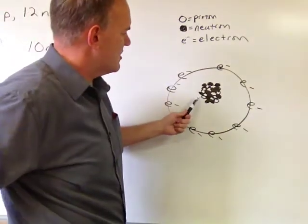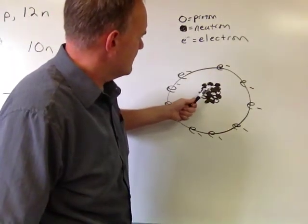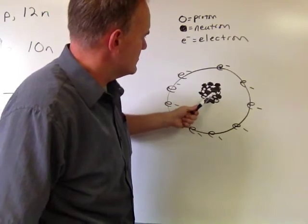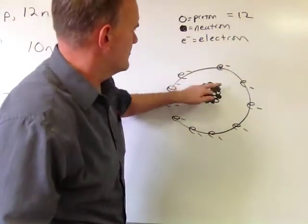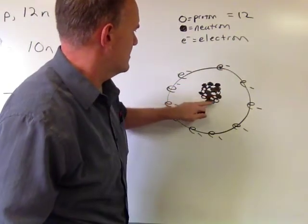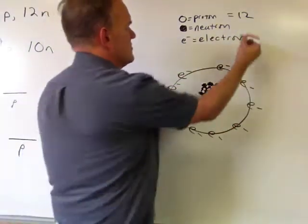So in this drawing if we count them up we have 1, 2, 3, 4, 5, 6, 7, 8, 9, 10, 11, 12 protons, we have 1, 2, 3, 4, 5, 6, 7, 8, 9, 10, 11, 12 neutrons,